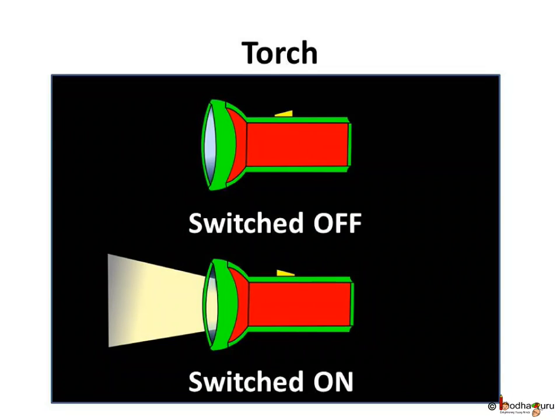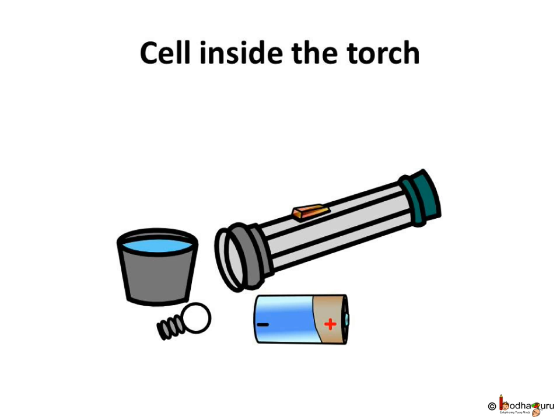The bulb glows when the torch is switched on. What happens when the switch is on? Let us open the torch and see what is inside it. We see a cell and a bulb inside it and few wire connections.